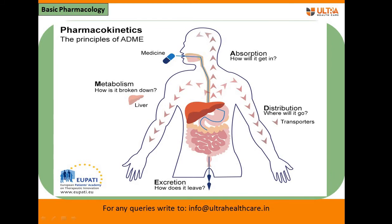We can understand ADME through this picture. First is absorption: the drug enters the body through various routes. For example, a capsule enters through the oral cavity and gets absorbed in the stomach. Most oral solid dosage forms are absorbed in the stomach, but in the case of injection, the drug is not absorbed — it goes directly into the bloodstream.